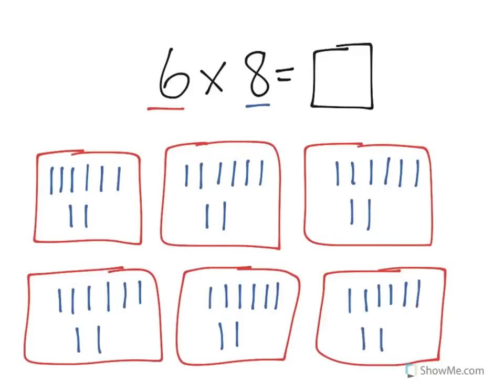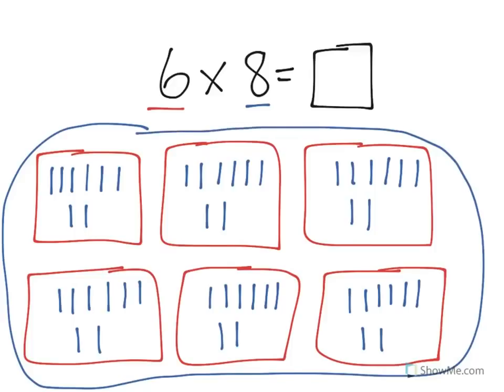And if I were to count up all of them, that would give me the answer to this problem. Rather than counting them all up, I'll just go ahead and let you know that if I were to count them up, I would get an answer or a product of 48. 6 times 8 is equal to 48.